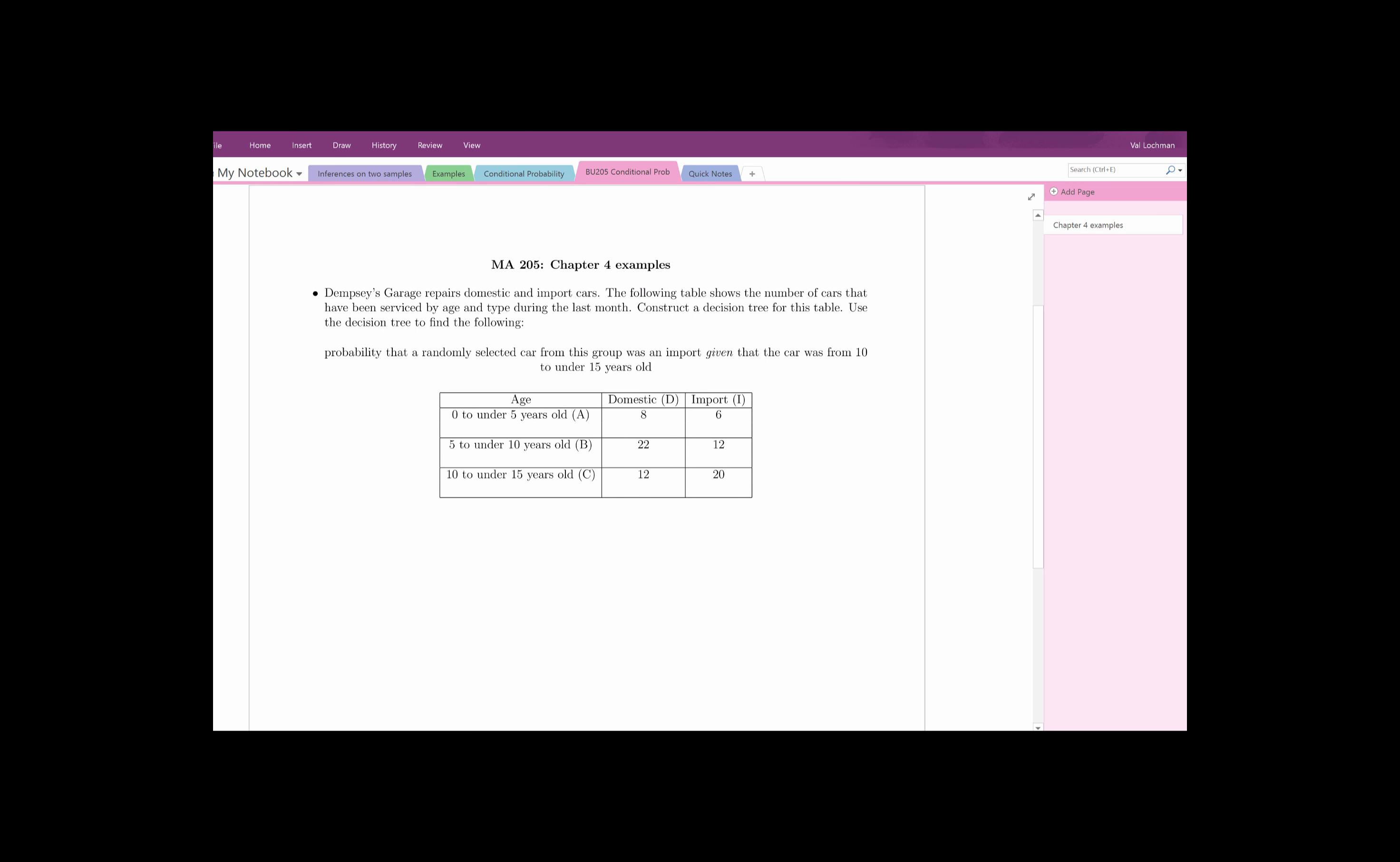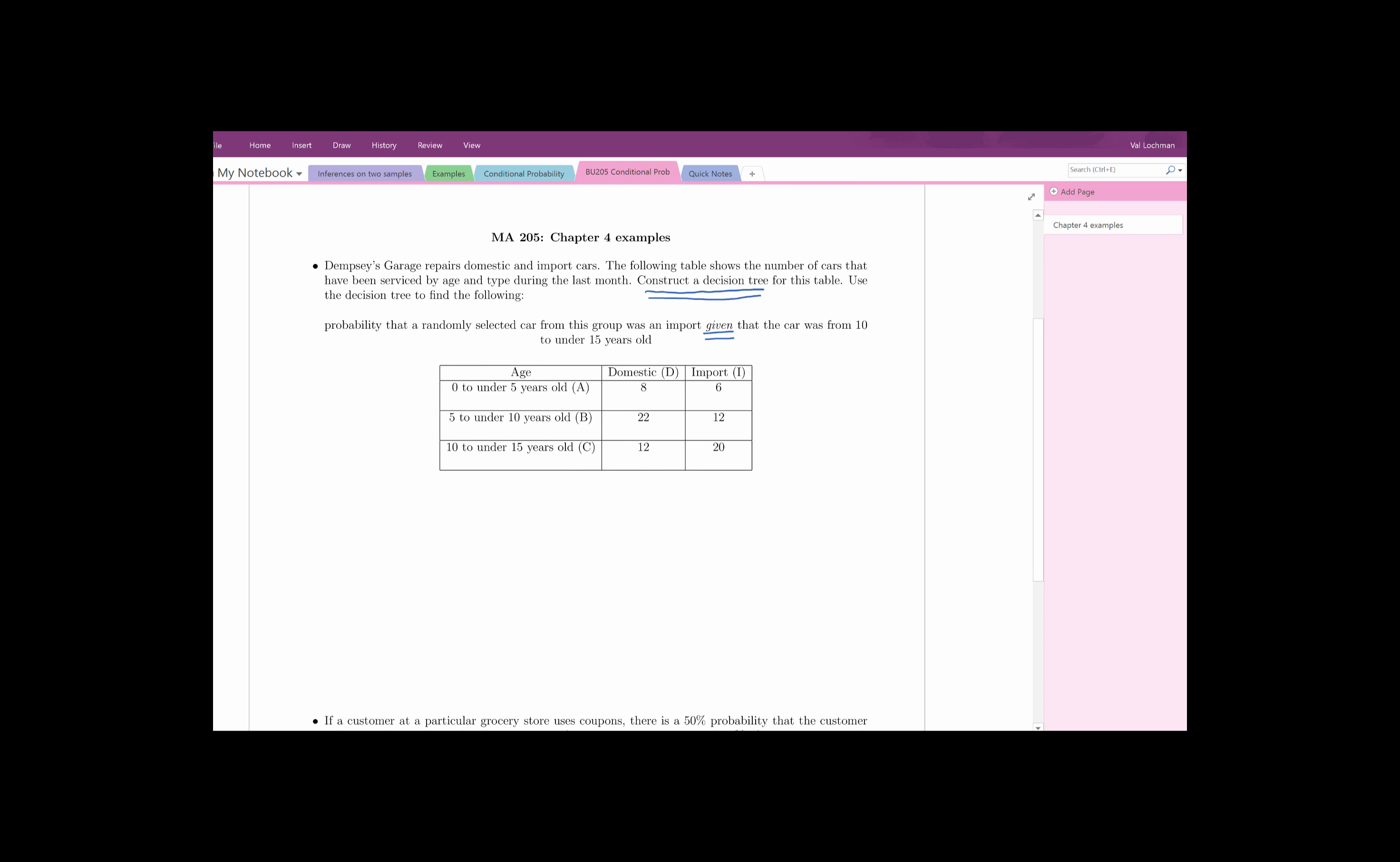So let's go ahead and solve a couple of problems. The first problem says the following: we have a table of frequencies where frequencies represent number of cars served in this particular garage and each car is categorized by age and if it's domestic or import. They want us to construct a decision tree and then find the probability that a randomly selected car from this group was an import given that the car was from 10 under 15 year old.